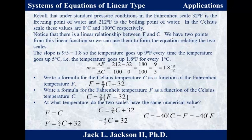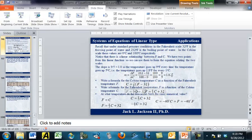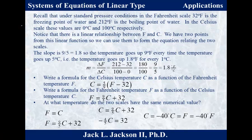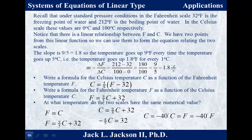Since when C is 0, F is 32, we can write the slope-intercept form: F = (9/5)C + 32. Then solving that same equation for C gives C = (5/9)(F − 32). Use C = (5/9)(F − 32) when you know the Fahrenheit temperature and want to find Celsius, and use F = (9/5)C + 32 when you know Celsius and want to find Fahrenheit.